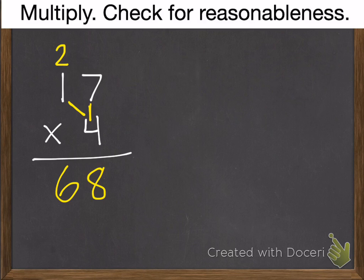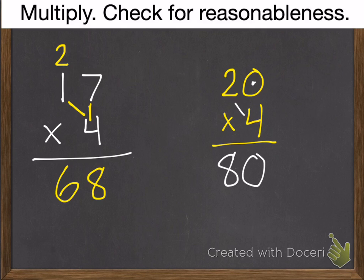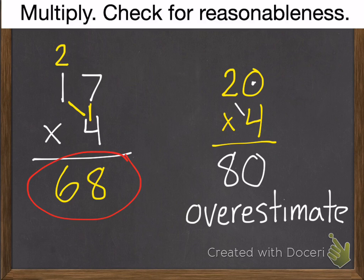Then I check for reasonableness. I'll round 17 to 20, times 4. 4 times 2 is 8, plus a 0, which is 80. Since I rounded up from 17 to 20, I know this is going to be an overestimate. So the real answer is going to be slightly less. 68 is slightly less than 80. So I'm going to say that that is reasonable.